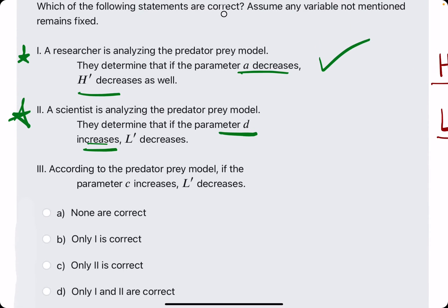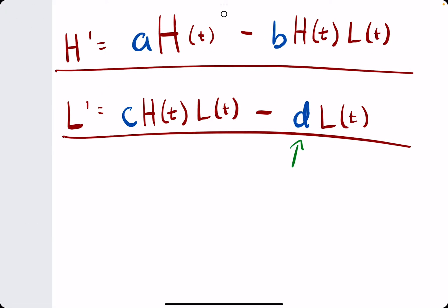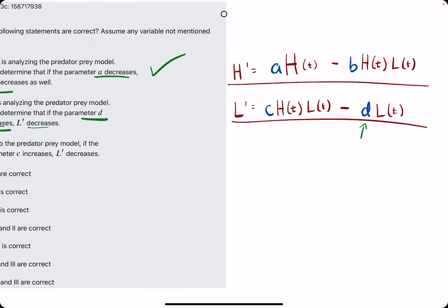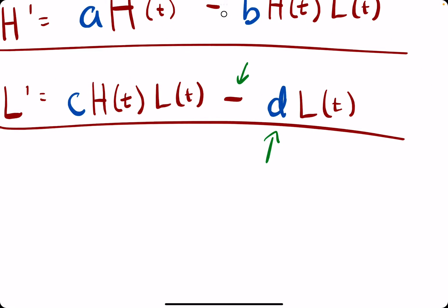We can see it has an opposite kind of statement, which usually isn't the case if it's going to be true. But in this case, if D is increasing, but D has a negative sign in front of it, that means it's increasing the amount being taken away from the overall L' value.